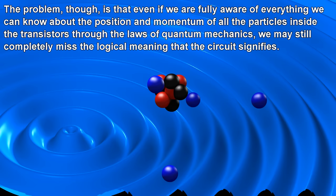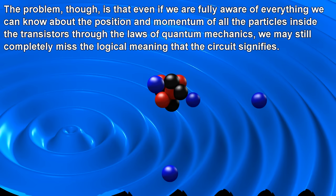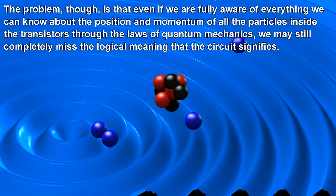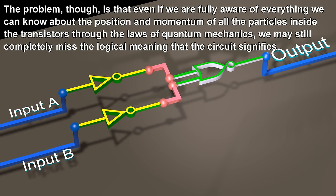The problem, though, is that even if we are fully aware of everything we can know about the position and momentum of all the particles inside the transistors through the laws of quantum mechanics, we may still completely miss the logical meaning that the circuit signifies.